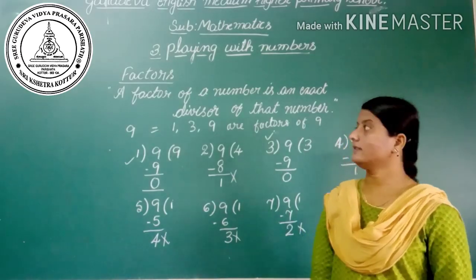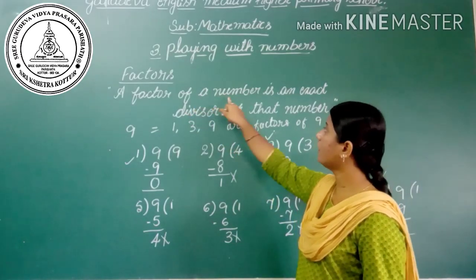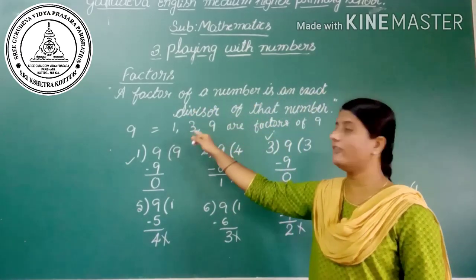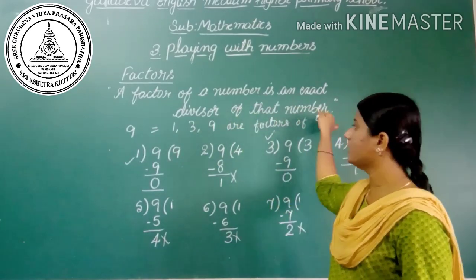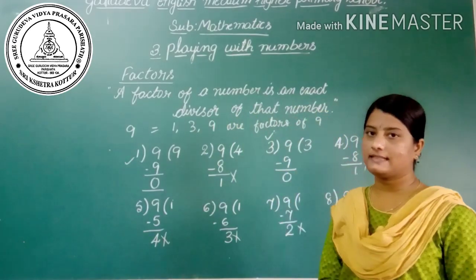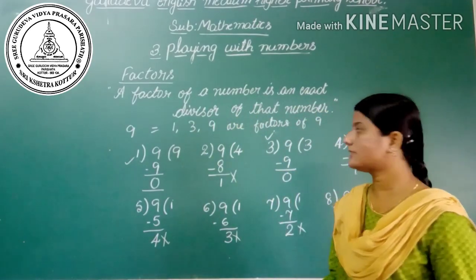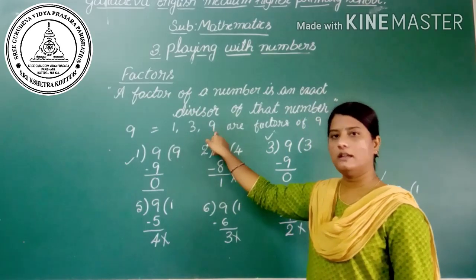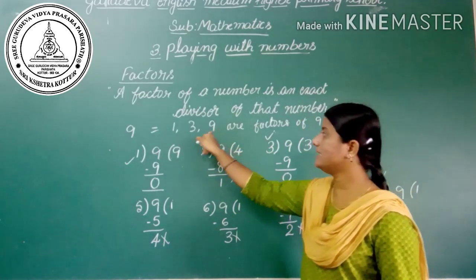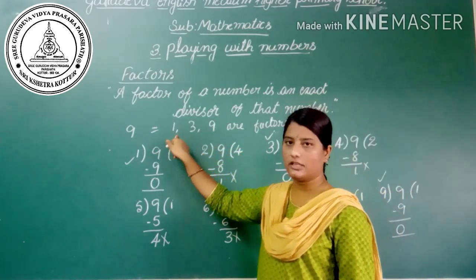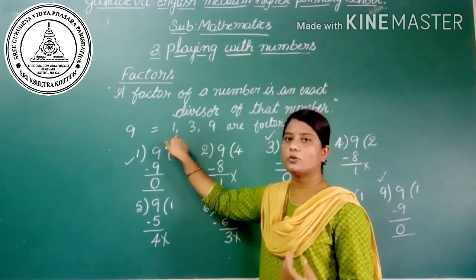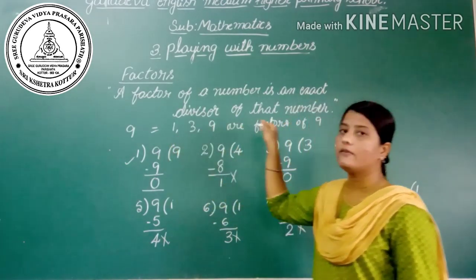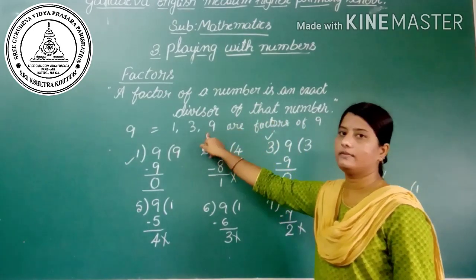The definition says a factor of a number is an exact divisor of that number. The exact divisors of 9 are 1, 3, and 9. So these are the exact divisors, and we can call them factors of 9.